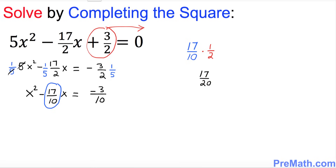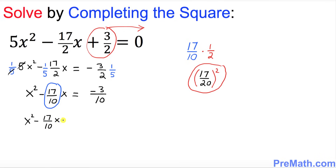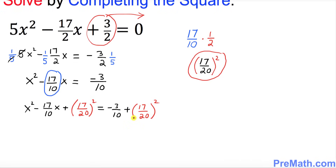Now whatever number we got we must square it. So go ahead and square this number — that is the value we are going to add on both sides of this equation. So we have x squared minus 17 over 10x plus equals negative 3 over 10 plus, and we add 17 over 20 squared on both sides.